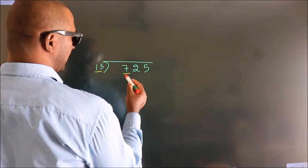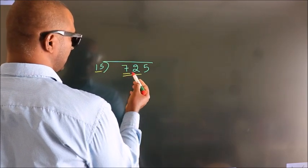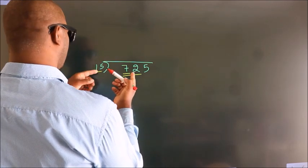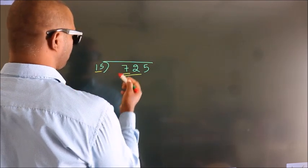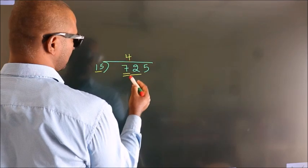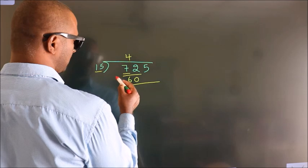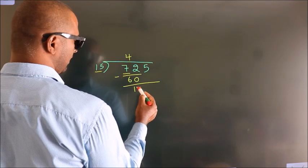So we should take two numbers, 72. A number close to 72 in the 15 table is 15 times 4, which is 60. Now we should subtract, and we get 12.